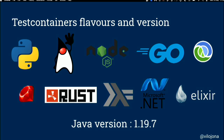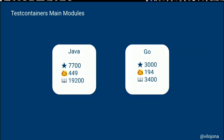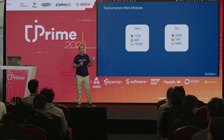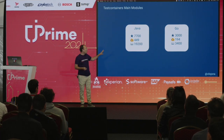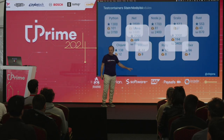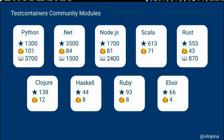Test containers has libraries for several languages — from Python to Go, Elixir, Rust, among others, but also Java. Java and Go are the two main modules, maintained by Atomic Jar and Docker employees. There are lots of people contributing to those modules. They also have other modules mainly contributed by communities, with many languages available, so your language is likely here.